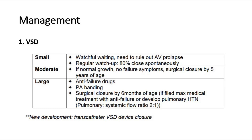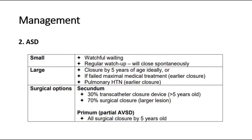Besides surgical closure, there is also a newer method which is transcatheter VSD closure. For ASD (atrial septal defect), small ones we can do watchful waiting, whereas large ones require closure by 5 years old. If there are complications, then we will need an earlier closure of the defect.